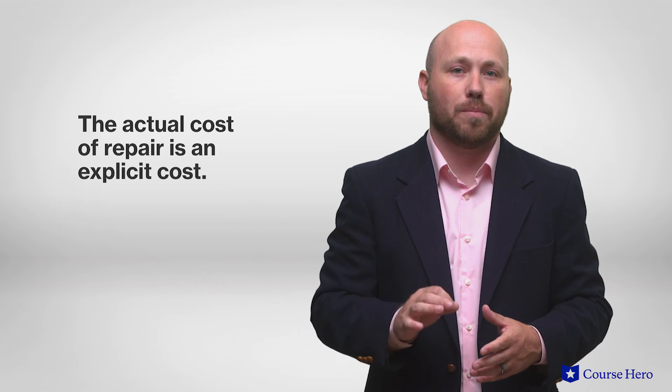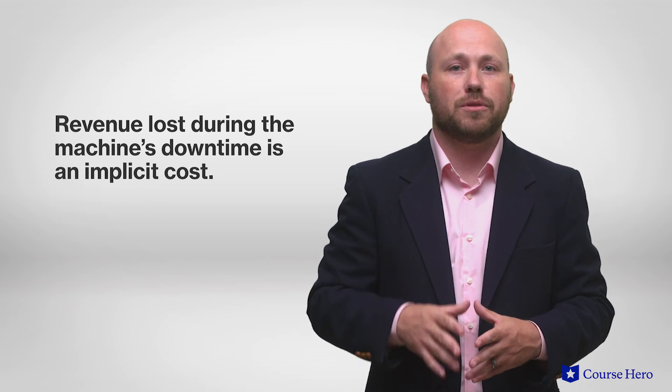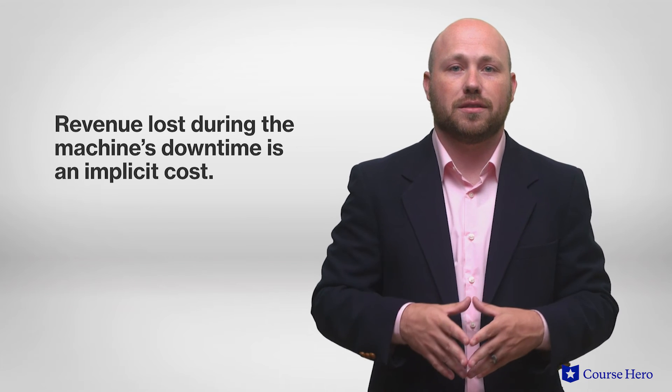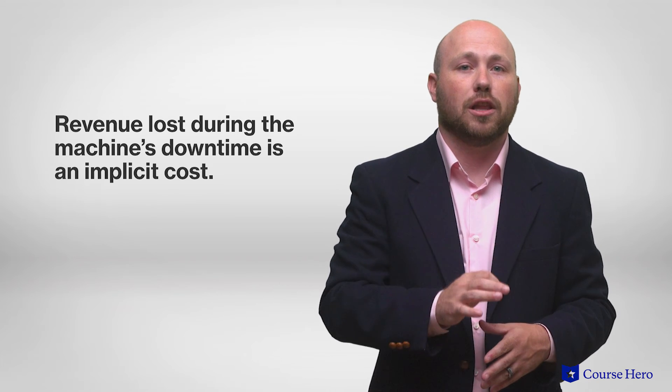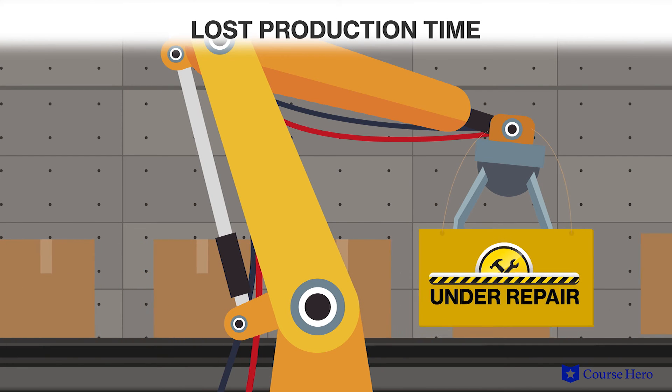Many costs have both explicit and implicit portions. For example, if a machine in a factory breaks down and needs repair, the actual cost of the repair is an explicit cost. But the revenue lost during the machine's downtime is an implicit cost. It is the cost associated with lost production time. By not using the machine during the repair time, the company gives up some of its ability to produce.